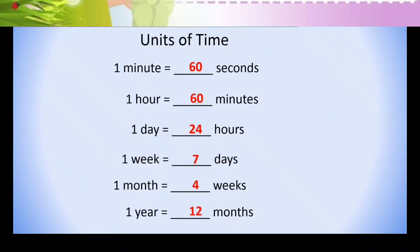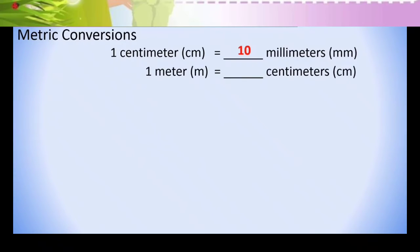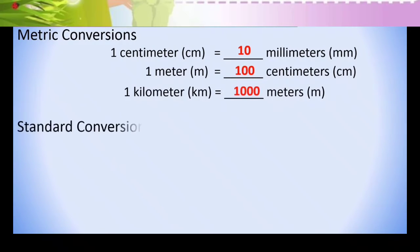One year is equal to 12 months. For metric conversion we have: One centimeter is equal to 10 millimeters. One meter is equal to 100 centimeters. One kilometer is equal to 1,000 meters.